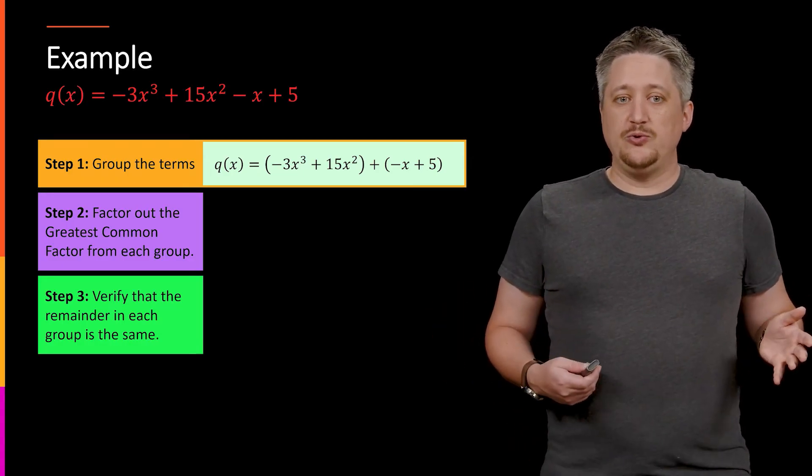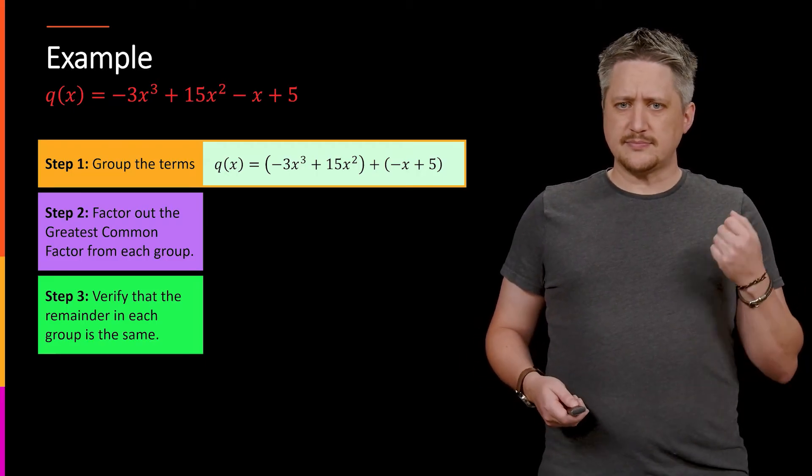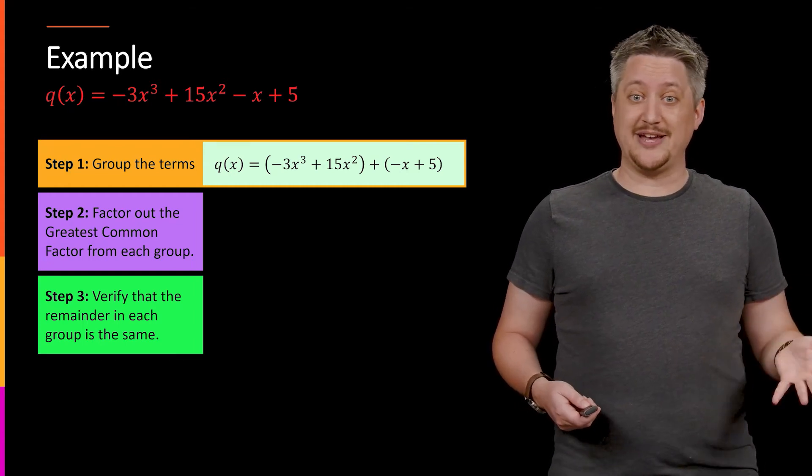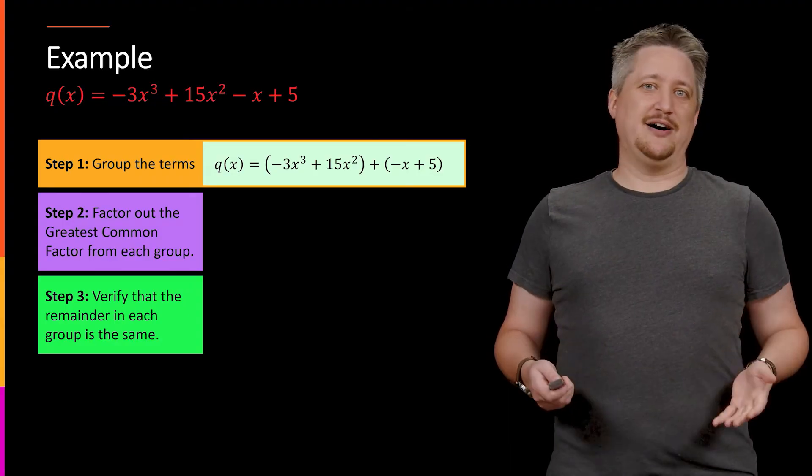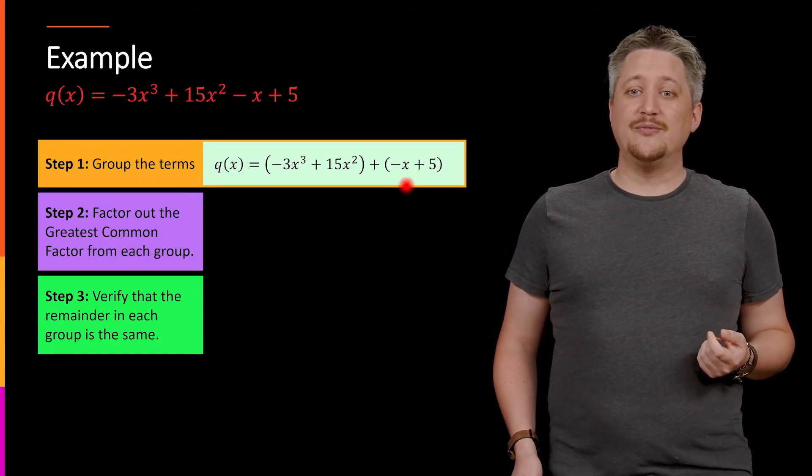Now I'm going to want to do the greatest common factor. Pull out of each. So in the first part, I could pull out, for example, 3x², and that would give me a negative x and a five. But I usually like to have positive leading terms. So I'm going to pull out the negative along with it. And for the same reason, because I liked it, the goal is to have the same thing left over.